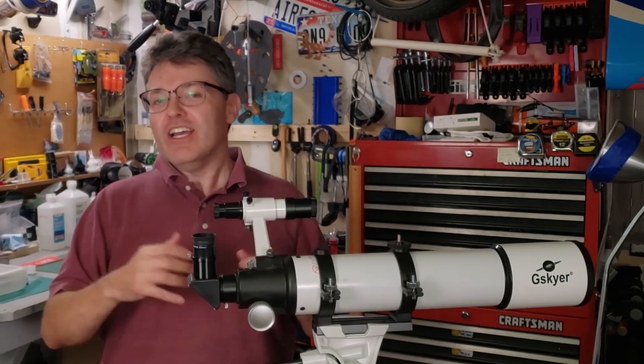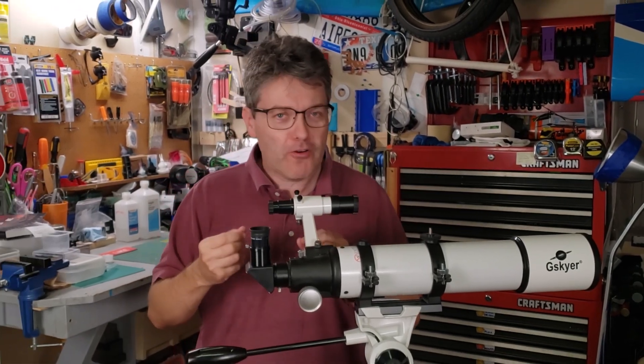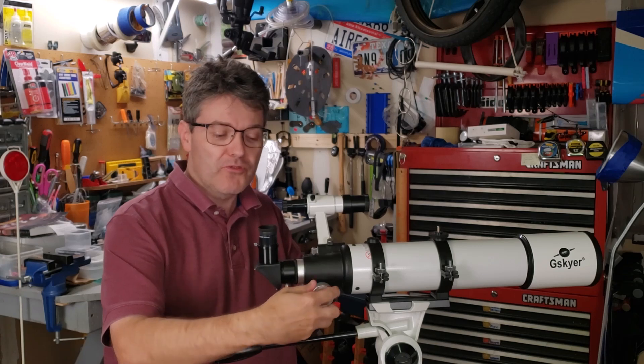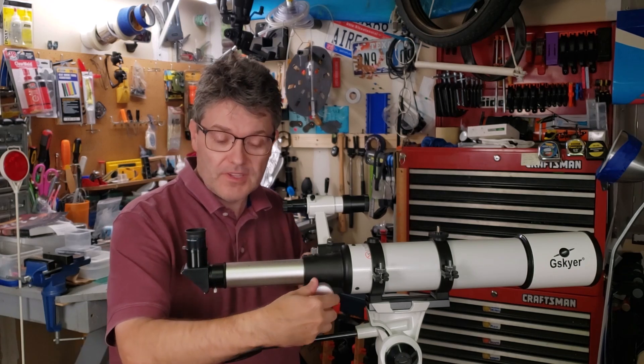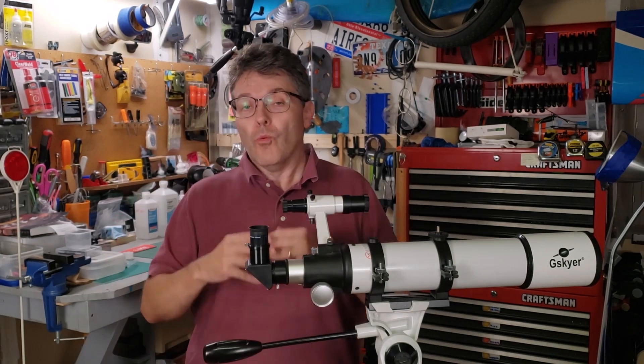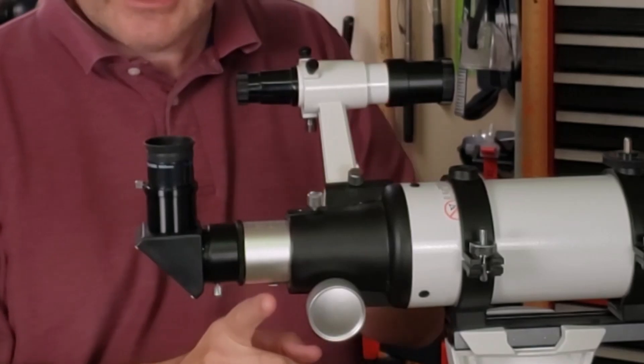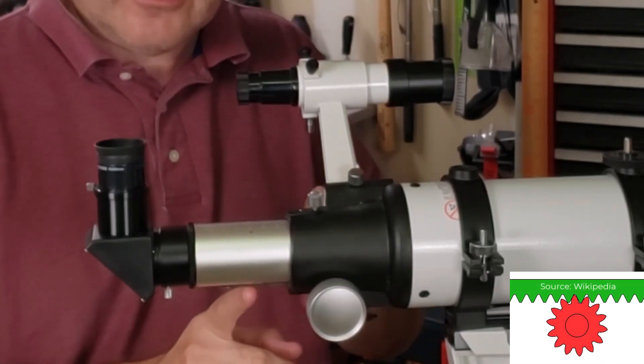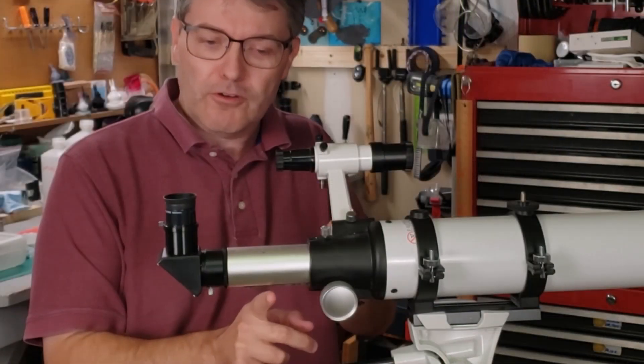Welcome back to the channel. A refractor telescope focuses by turning this knob and moving the focuser tube out or in. What's going on is that the knob has a little pinion gear on it that is spinning and pushing against a rack of gear teeth that are on the bottom of the focuser tube.